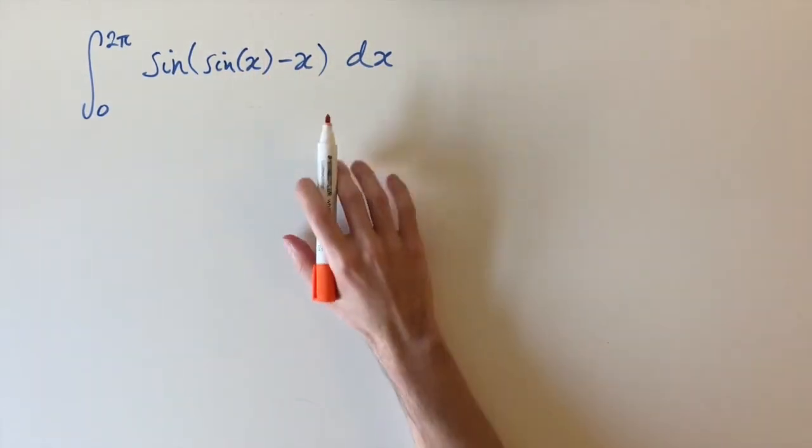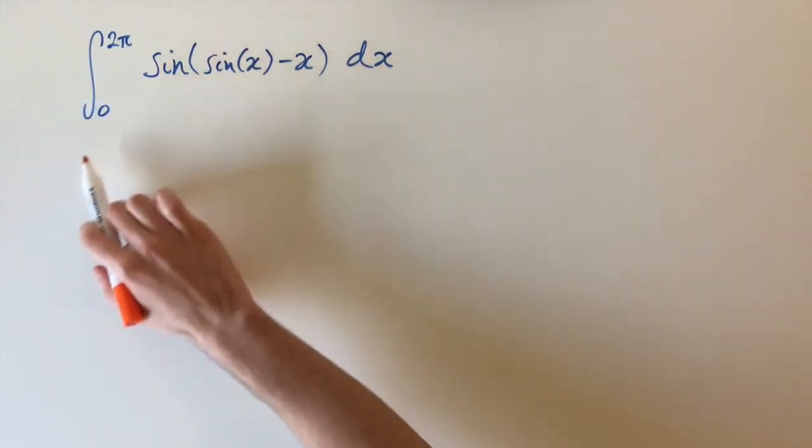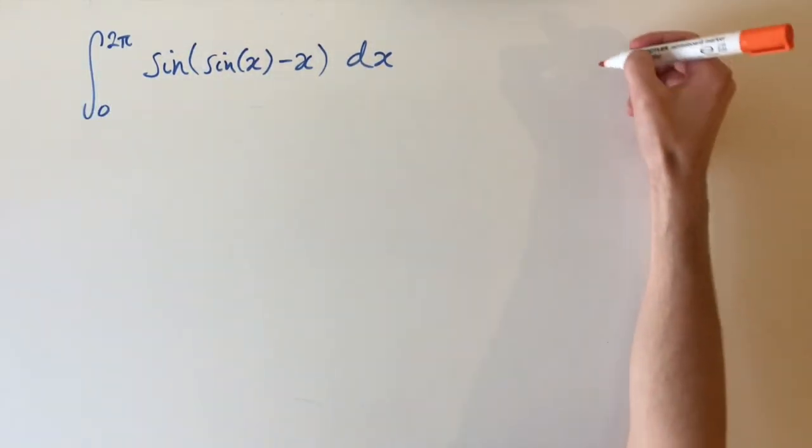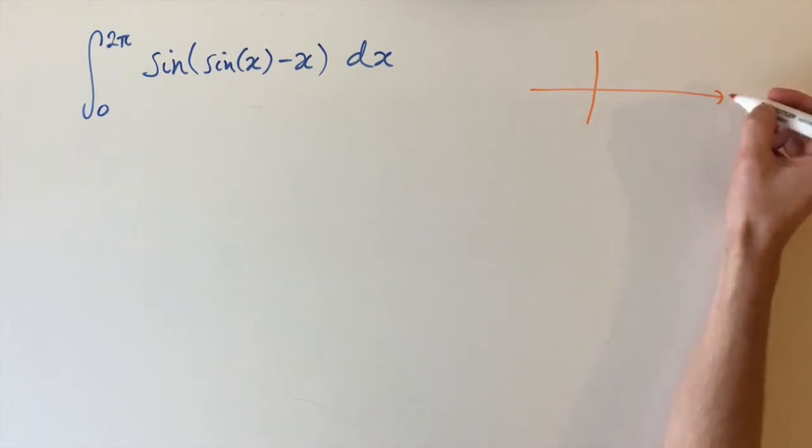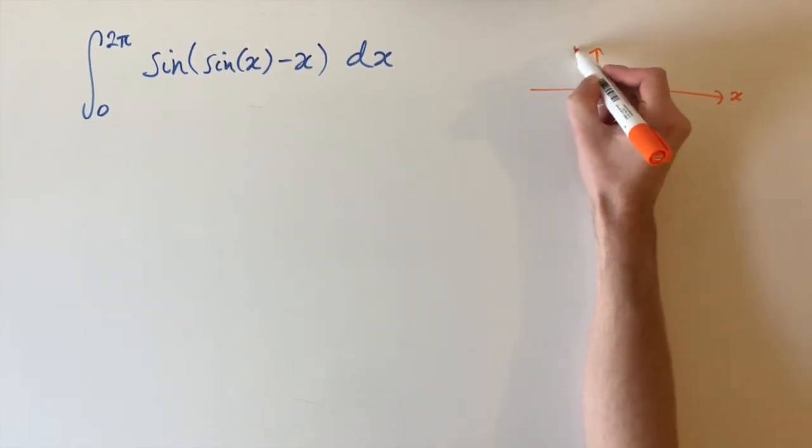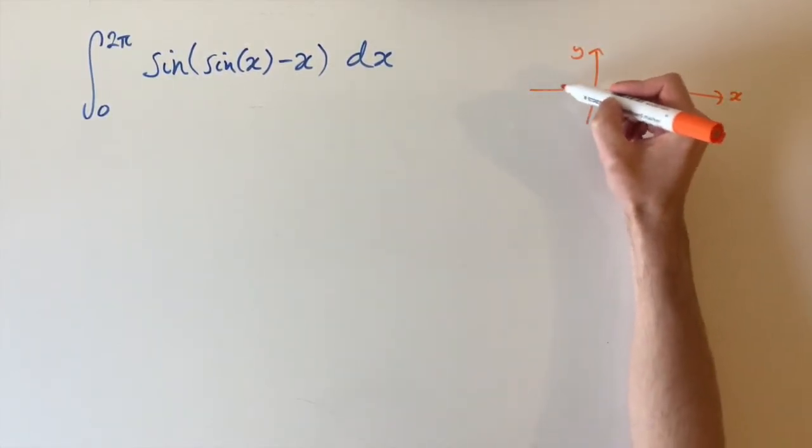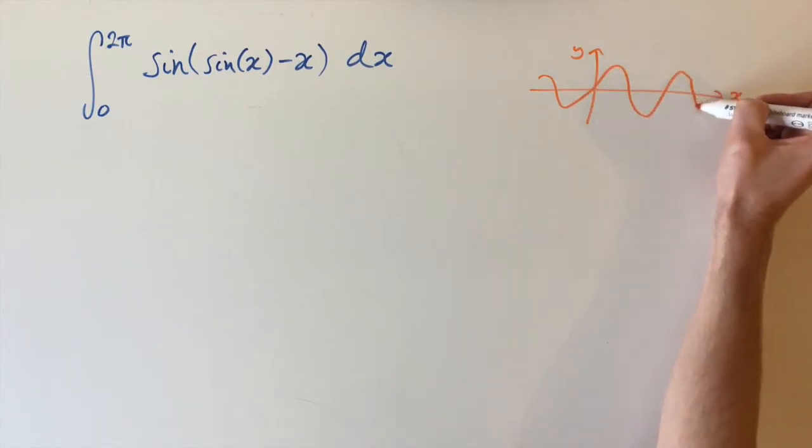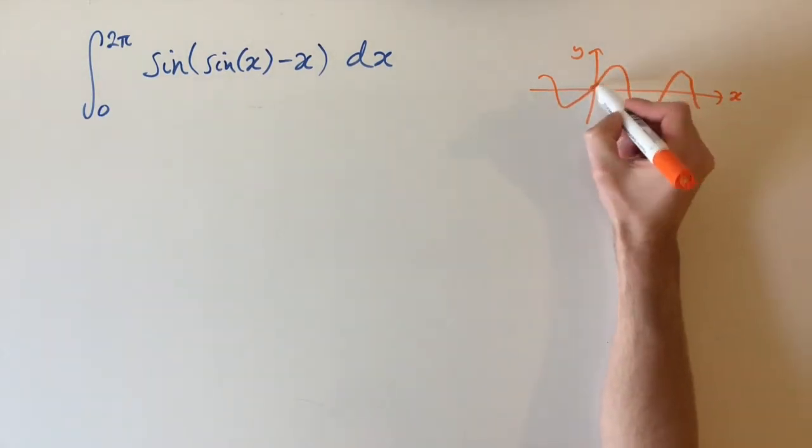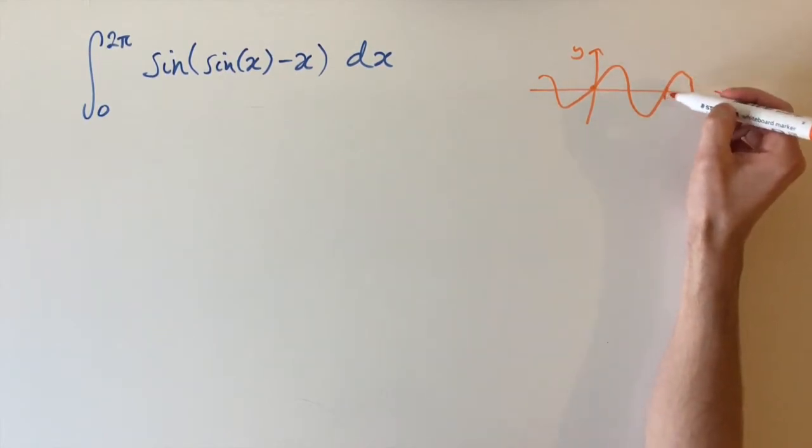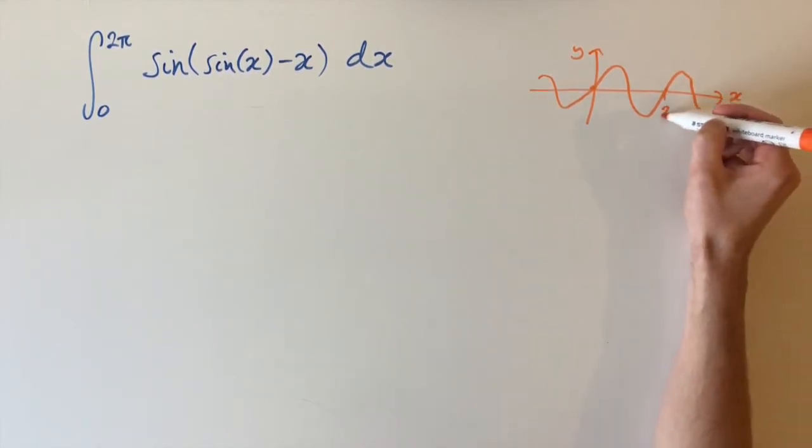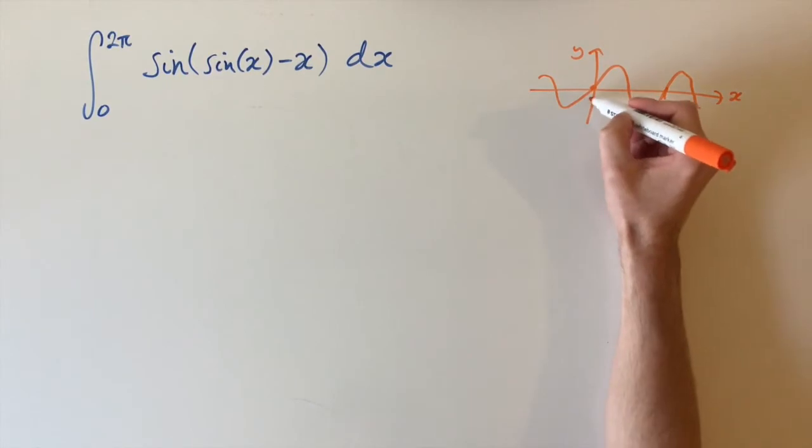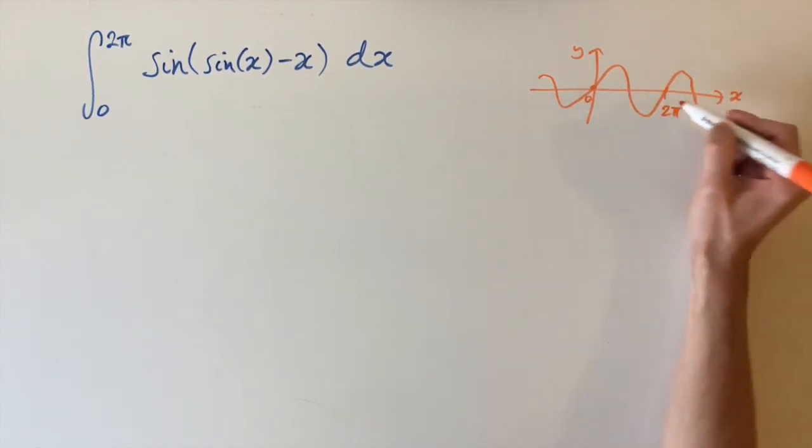The first thing to notice is that we're integrating over a whole cycle of sine. So if we just sketch the graph of sin(x), if this is our xy plane, then sine curves look something like this. It oscillates up and down and goes through the origin. At 2π, it also crosses the x-axis and it's periodic. So between 0 and 2π, it's just going to repeat every 2π.